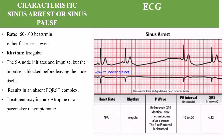In sinus arrhythmia ECG the heart rate is 60 to 100 beats per minute with an irregular rhythm. From one R wave to the next we can see one long pause — a missing QRS — making this an irregular rhythm. The SA node initiates the impulse, but the impulse is blocked before leaving the node itself, which affects the ECG strip.